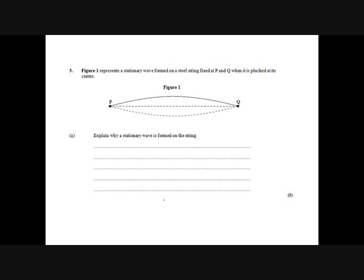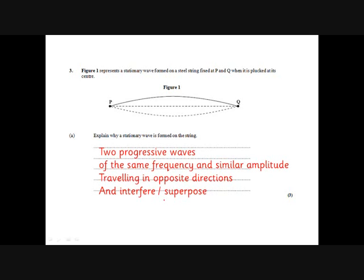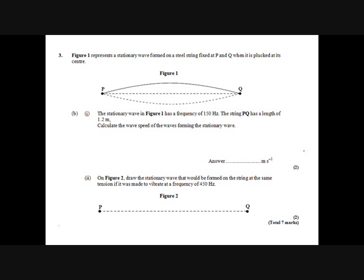Once again, explain why a stationary wave is formed on the string. What's maybe missing here is reflection. So you could talk about the wave hitting the one end and reflecting back. We don't have to make it vibrate at both ends. And then a similar question before.